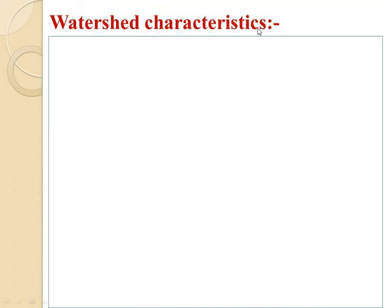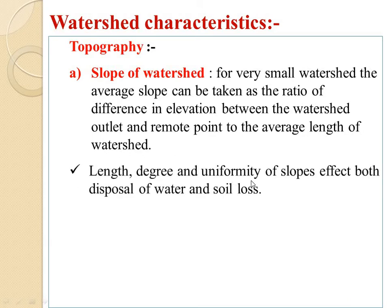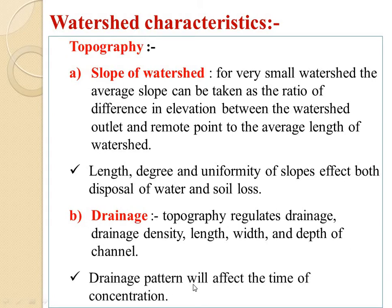Next watershed characteristic is topography. For the slope of watershed, in very small watersheds the average slope can be taken as the ratio of difference in elevation between the watershed outlet and remote point to the average length of the watershed. The degree and uniformity of slopes affect both disposal of water and soil loss. Drainage topography regulates drainage density, length, width, and depth of channel. Drainage pattern will affect the time of concentration.